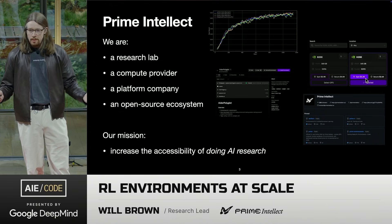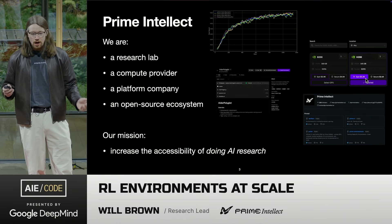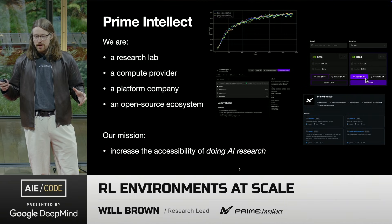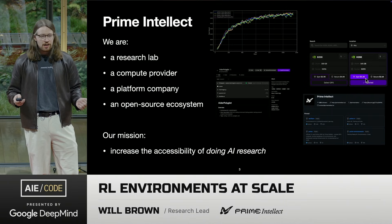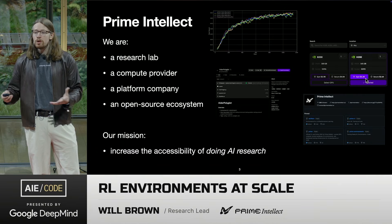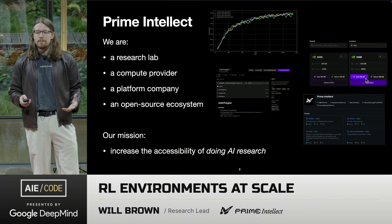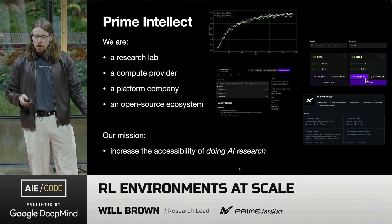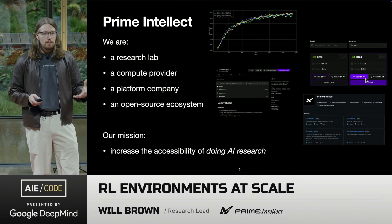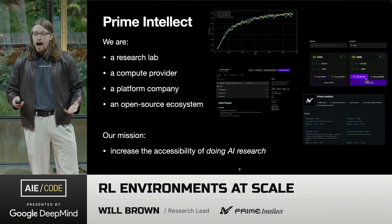I want to talk a bit about who we are at Prime Intellect. We are a bunch of things — we're a research lab, a compute provider, a platform company, and an open source ecosystem. We do a lot of things and they all fit together. We see this as different pieces of how we can build a business around increasing the accessibility of AI research and making research more of a toolkit available to organizations around the world without needing to be inside a large lab, spend crazy amounts on massive clusters, or go do a PhD.